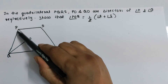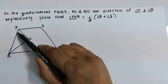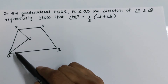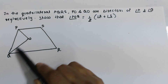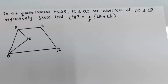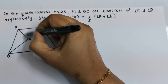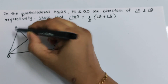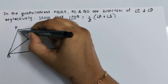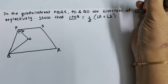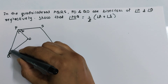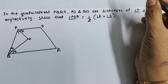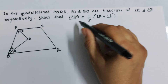Let's understand the question. This line PO bisects angle P, meaning it equally divides the angle into two equal parts. Similarly, QO bisects angle Q into two equal parts. So if I label the two halves of angle P as angle one and angle two, then angle one equals angle two. And for angle Q, labeling them angle three and angle four, angle three equals angle four. These are the bisectors.